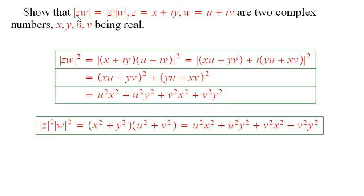I want to show that the absolute value of a product is the product of the absolute values when you have complex numbers.